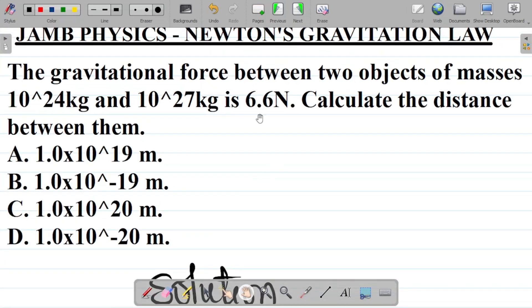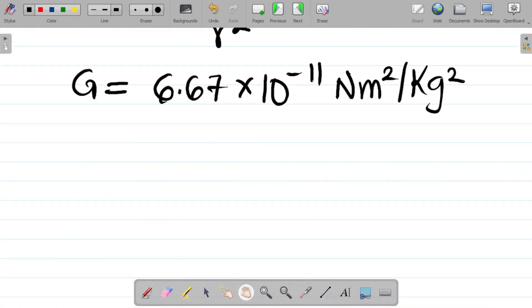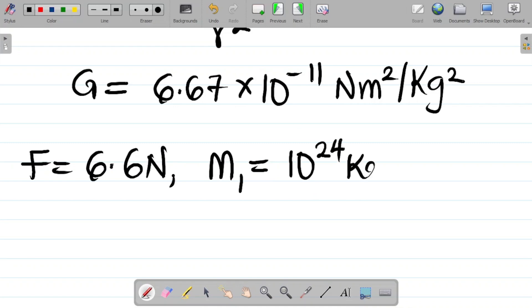First things first, I'm given F, the value of the force is 6.6 Newtons. I'm taking M1, the first mass as being 10 to power 24 kilogram and the second mass M2 as being 10 to power 27 kilogram. Let's input values.